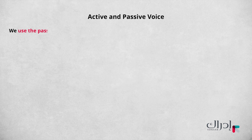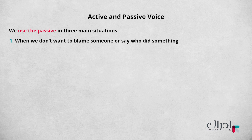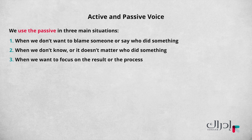So in short, passive sentences change how we think about the information in the sentence. We use the passive in three main situations: number one, when we don't want to blame someone or say who did something; number two, when we don't know or it doesn't matter who did something; number three, when we want to focus on the result or the process. Let's see if you understand this correctly — can you complete the exercise?